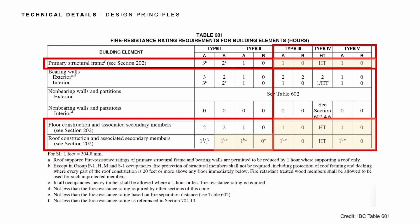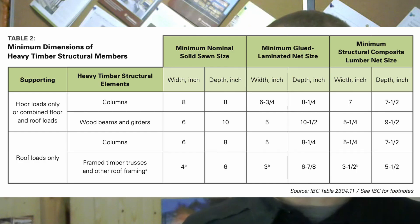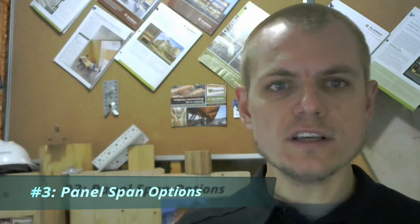Type four construction — you don't have to show a specific fire resistance rating, but you do have to meet minimum heavy or mass timber sizes for each of the structural elements. And then type 5A construction, you're providing a one-hour fire resistance rating for all of your interior structural elements. Number three is really a follow-on of the construction type and fire ratings, and that's the span of the members.